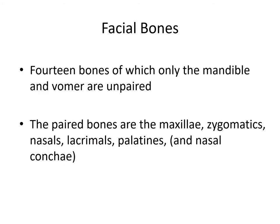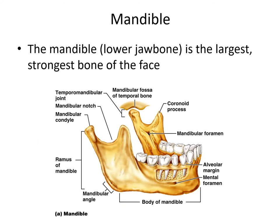The facial bones make up the framework of the face and nasal passages. We have 14 bones — all of them are paired with the exception of the mandible and the vomer. So we have paired maxillae, zygomatic bones, nasal bones, lacrimal bones, palatine bones, and also bones known as nasal conchae — separate from those of the ethmoid. The mandible or jawbone is the largest and strongest bone of the face and one of the strongest bones in the body; it connects to the temporal bone at the temporomandibular joint.